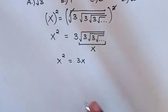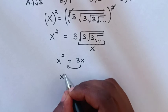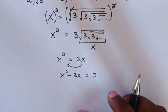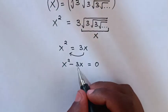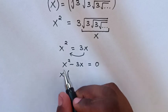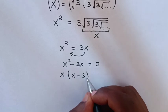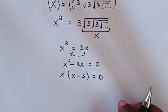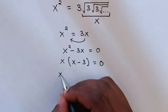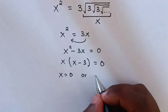Then, next step, we take this 3x to the left side, so it will be x squared minus 3x is equal to 0. Now, here x is common, so we take x out of bracket: x times (x minus 3) is equal to 0. Then we have two cases: x is equal to 0, or x minus 3 is equal to 0.